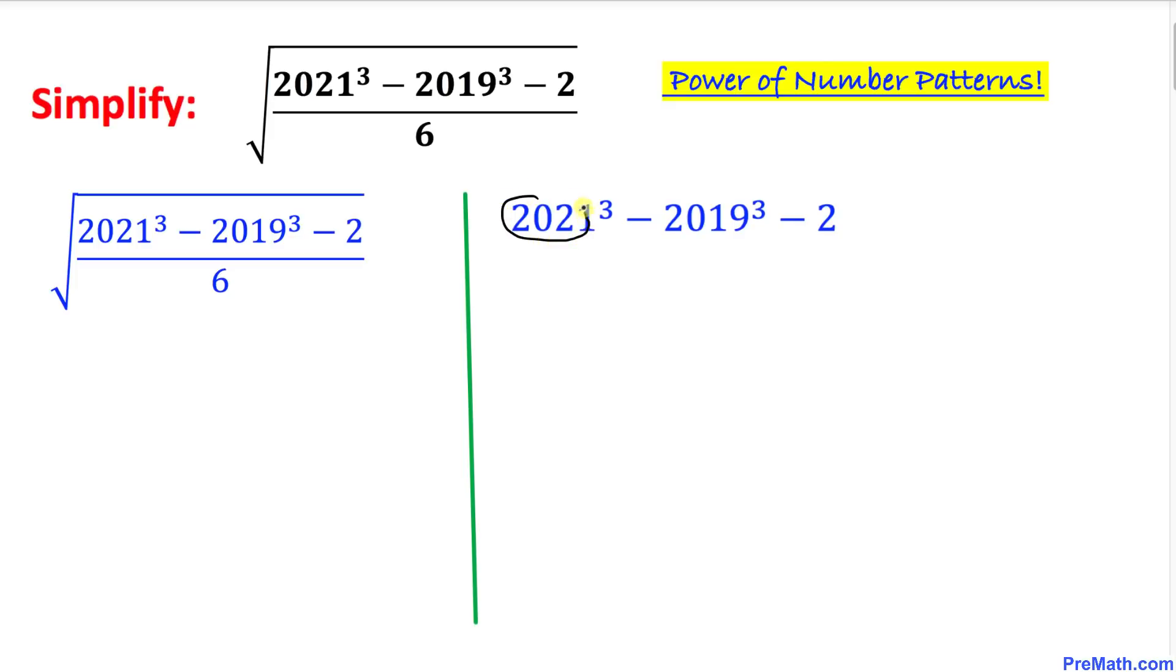Now let's go ahead and tweak it a little bit. This 2021 could be written as 2019 plus 2. So therefore I can write this one as (2019 + 2)³ minus 2019³ minus 2.